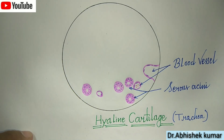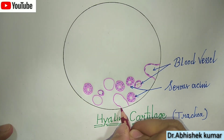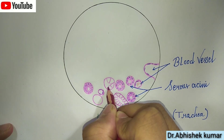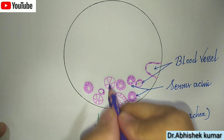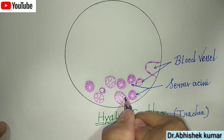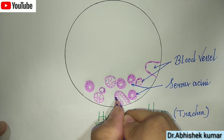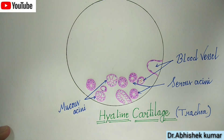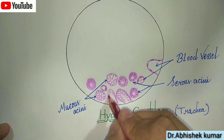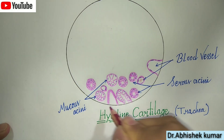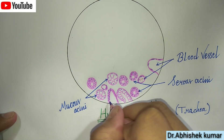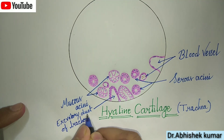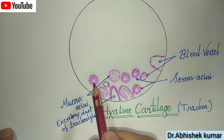This is the serous acini present in the histological diagram of trachea. Here is the mucous acini, and here is the excretory duct of the tracheal gland.